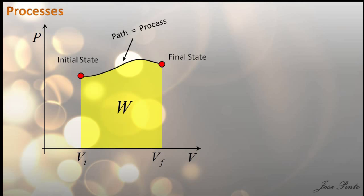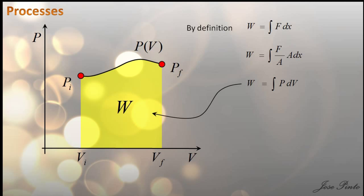This is why the differential dW for work is called an inexact differential. A state function is a thermodynamic variable which depends only on the current state of the system, not on the path taken to reach that state — just like internal energy, for example, which is totally independent of the path. So now you can classify the processes depending on what kind of path it takes.